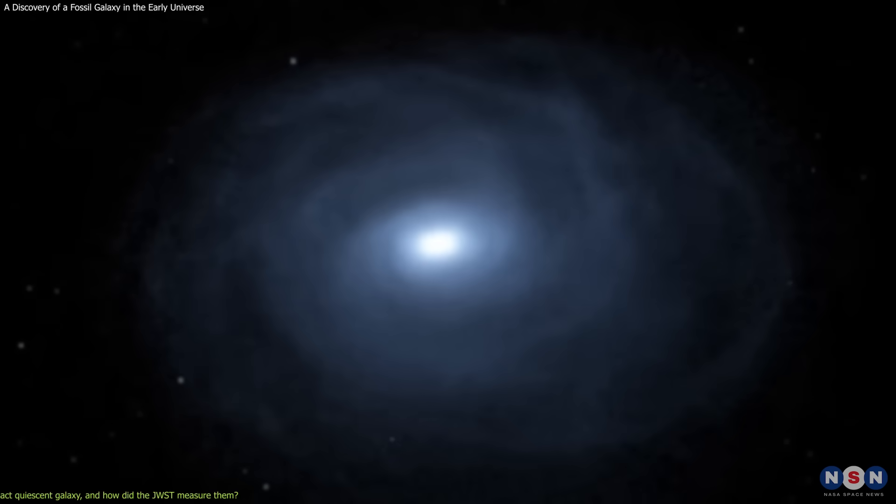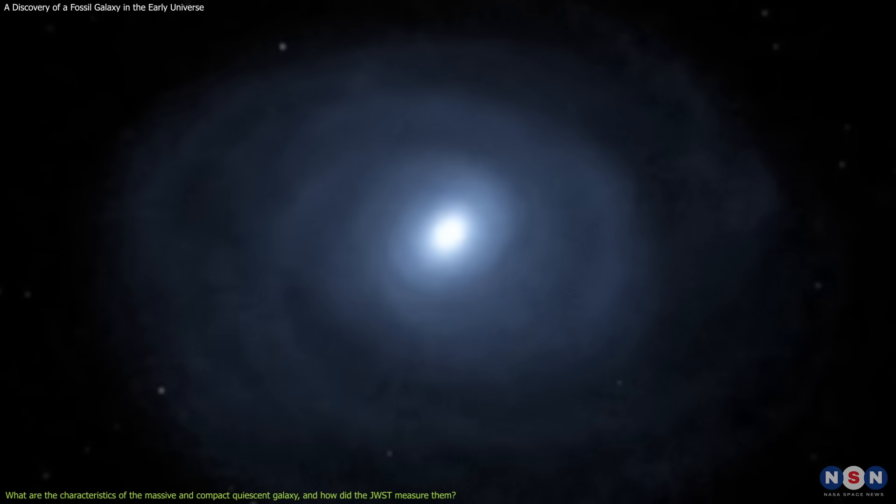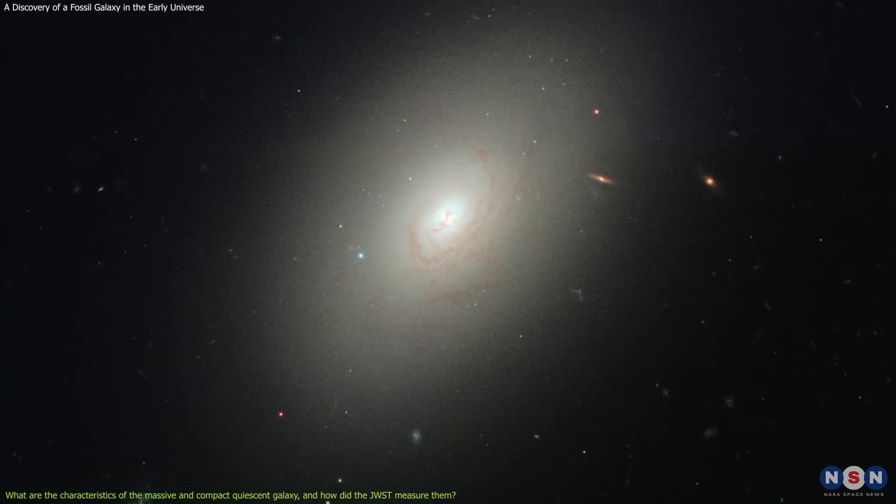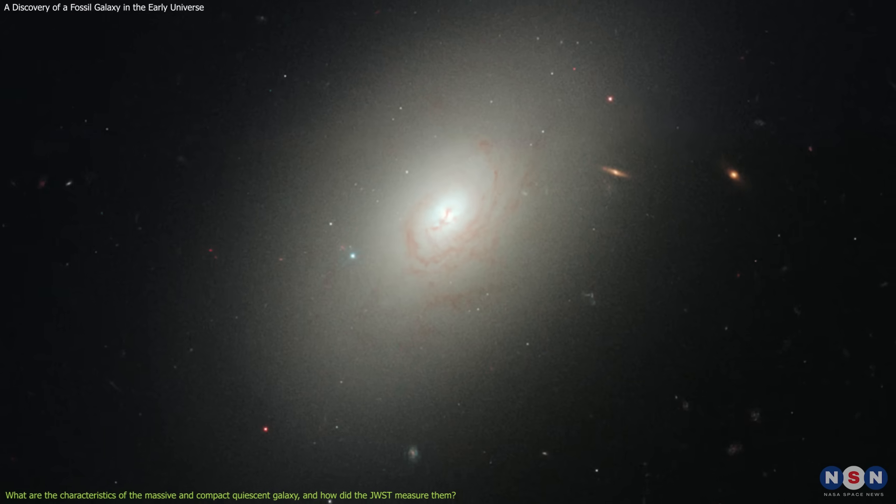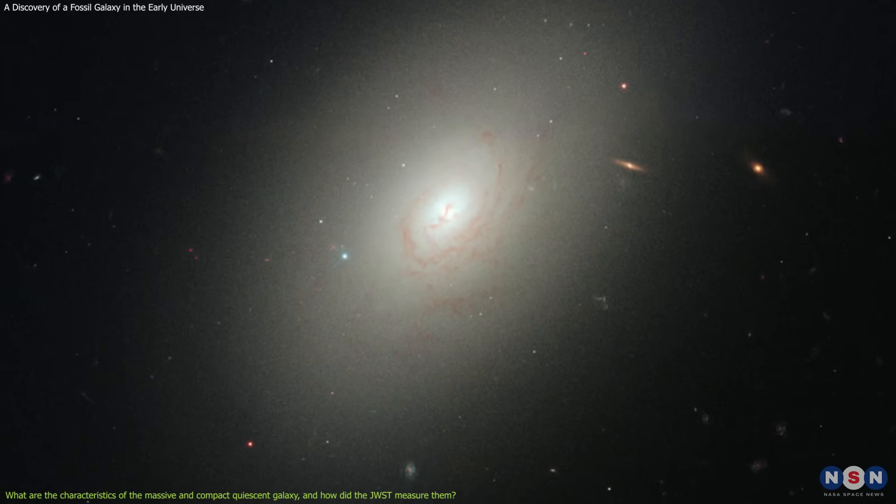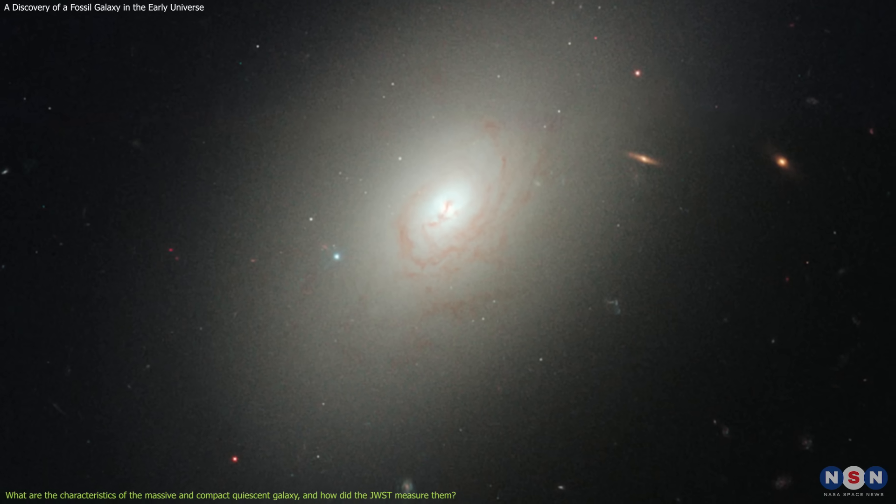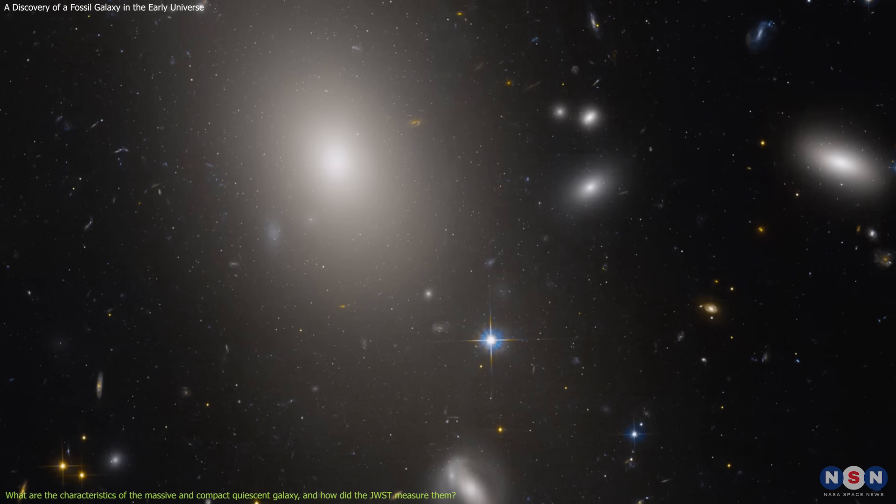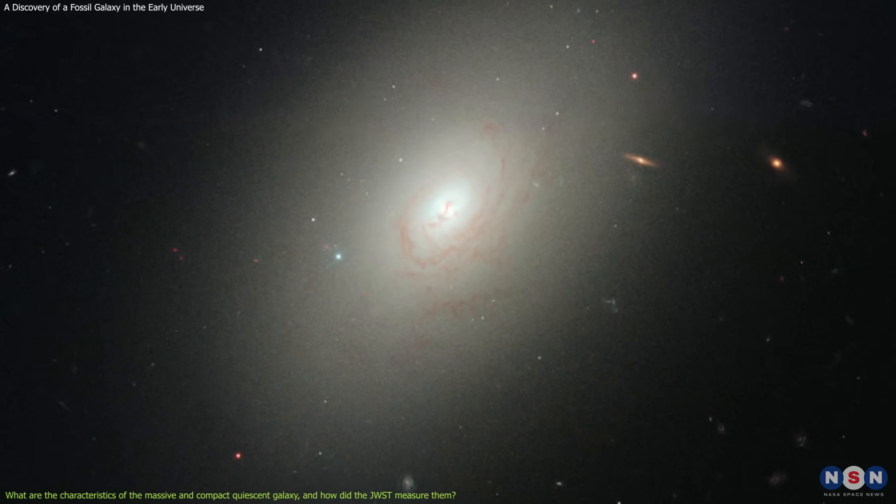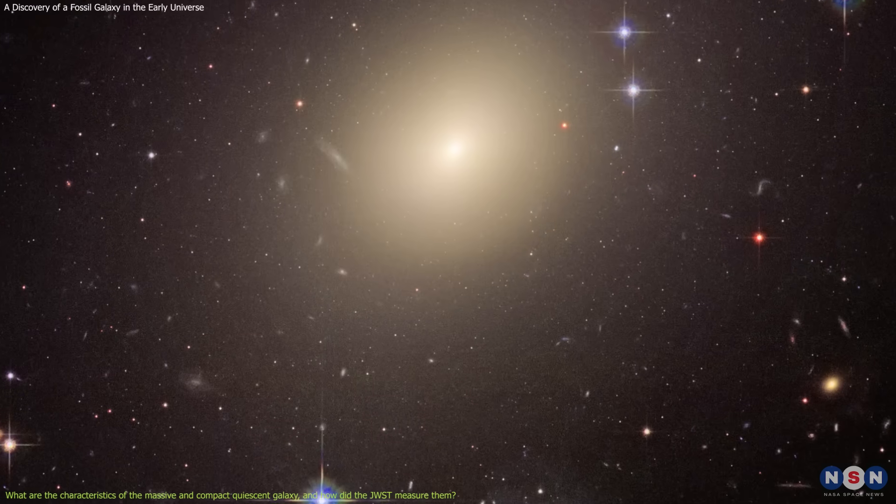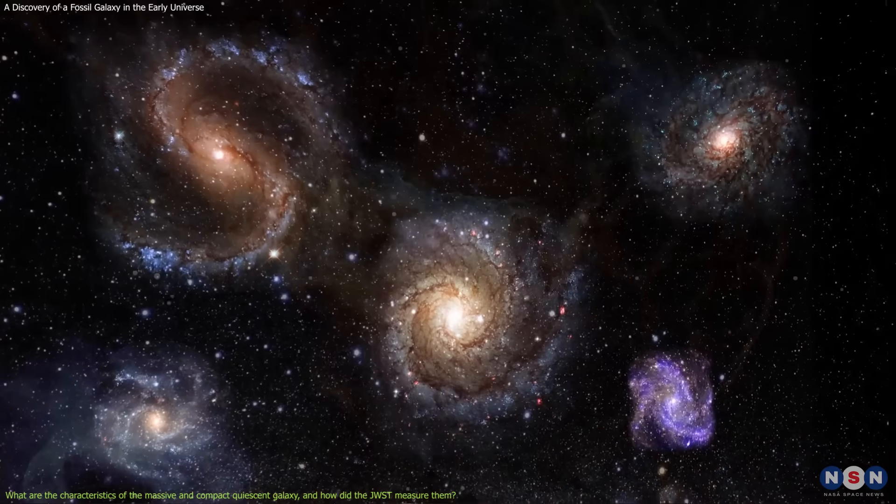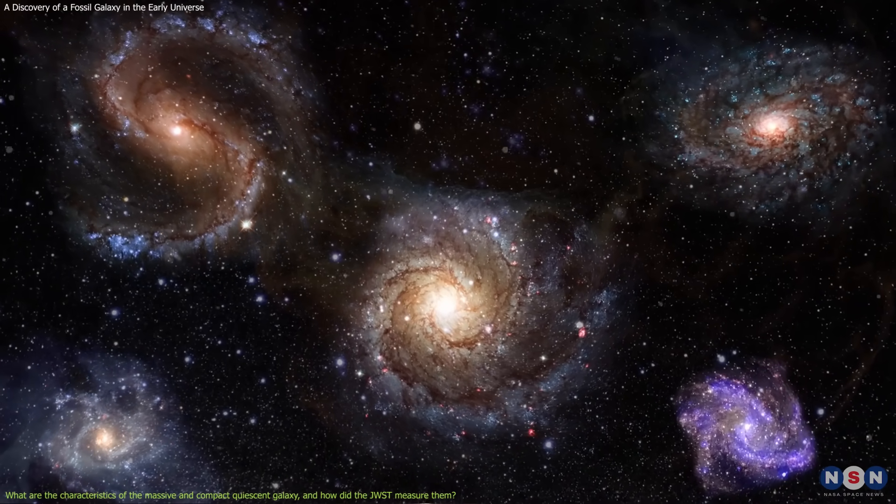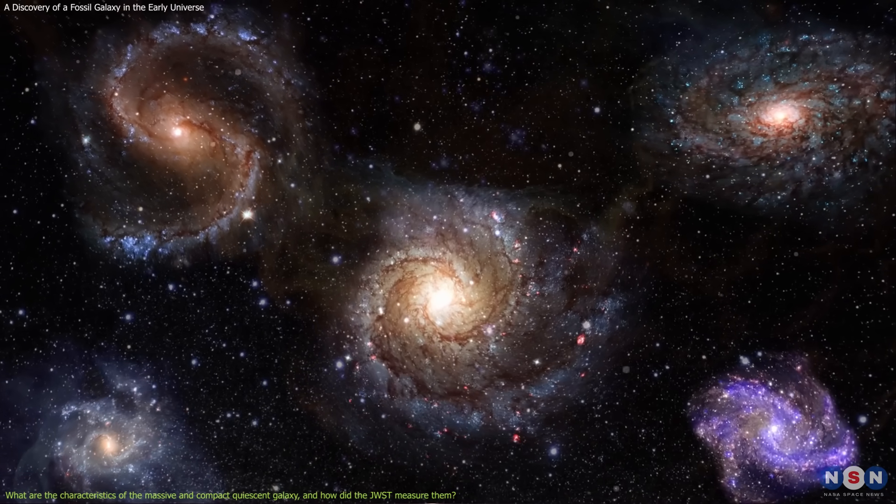The massive and compact quiescent galaxy is a type of galaxy that stopped forming stars and is a possible ancestor of giant elliptical galaxies. Giant elliptical galaxies are the largest and most massive galaxies in the universe, and they are usually found in the centers of galaxy clusters. They have a smooth and spherical shape, and they are composed of old and red stars. They are also very rare in the early universe, as most galaxies at that time were still forming stars and had irregular shapes.